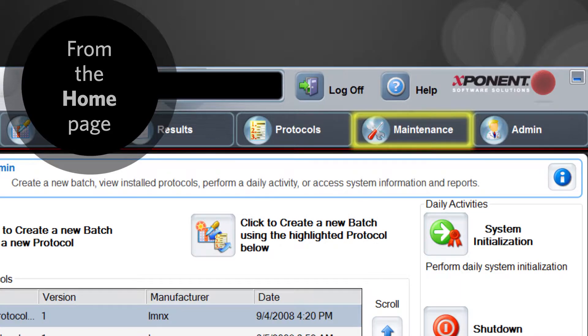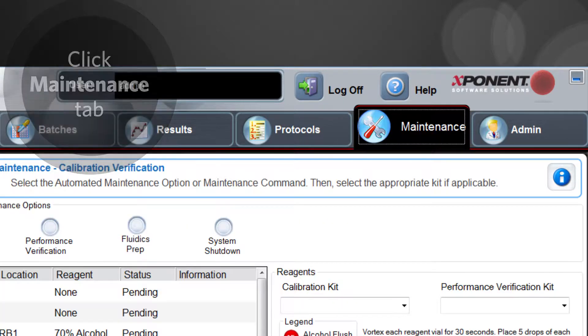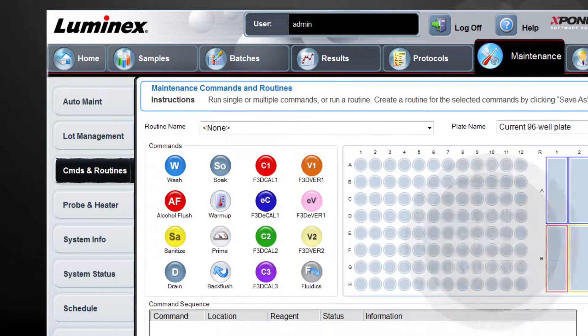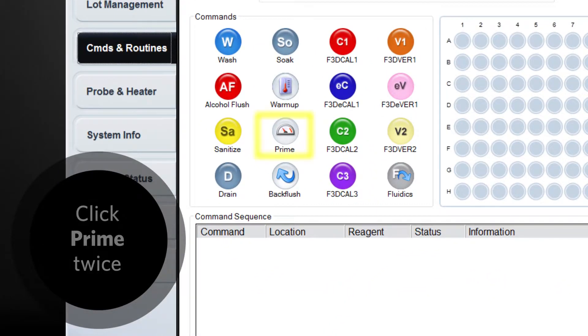From the home page, click the maintenance tab. On the maintenance tab, click commands and routines. From the commands list, click on prime twice to add it to the command sequence.